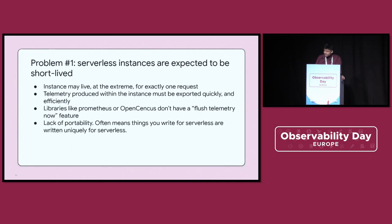Serverless compute is designed to reduce runtime of services. This means that instances in serverless might actually live at an extreme for exactly one request — they might pop up, serve a request, and then terminate. All telemetry produced by the serverless instance will need to export and flush very efficiently and quickly. A lot of the instrumentation libraries that exist right now don't actually have that functionality — they don't flush telemetry on shutdown. That doesn't happen with Prometheus and OpenCensus, for example. OpenTelemetry does support this, but we don't want to require everyone to just use that for instrumentation.